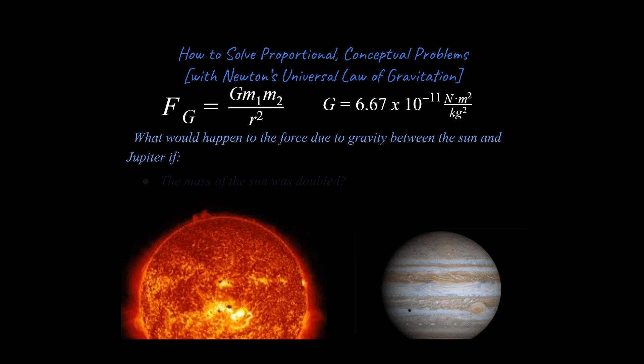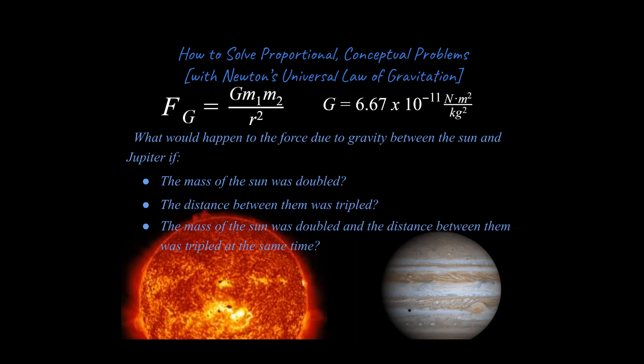Let me give you an example of the questions we're going to be asking today. What would happen to the force due to gravity between the Sun and Jupiter if the mass of the Sun was doubled, the distance between them was tripled, or the mass of the Sun was doubled and the distance between them was tripled at the same time?